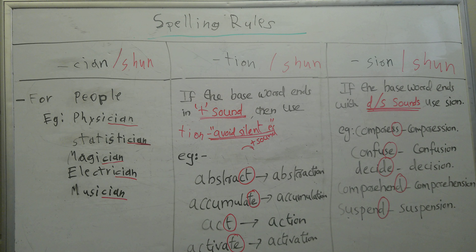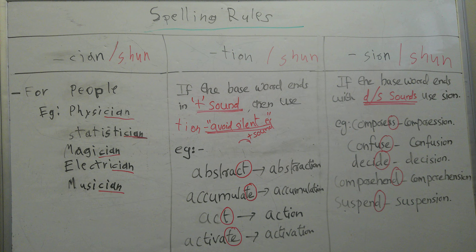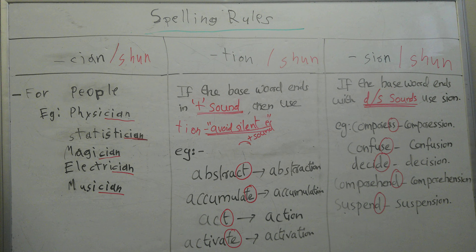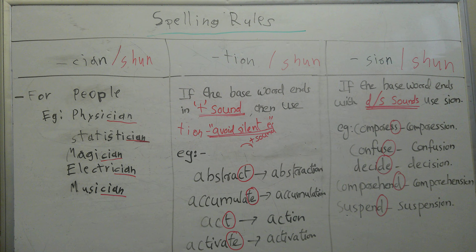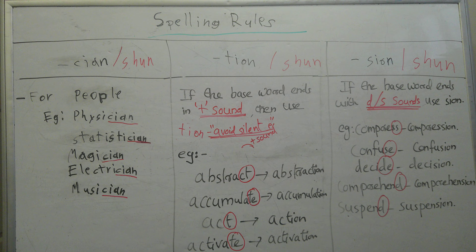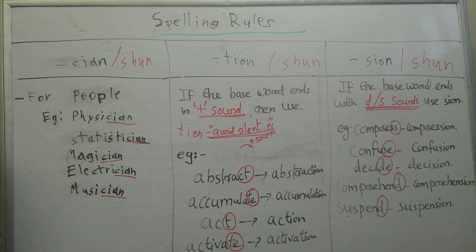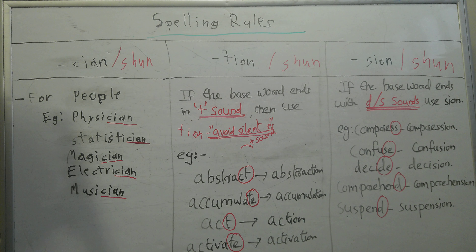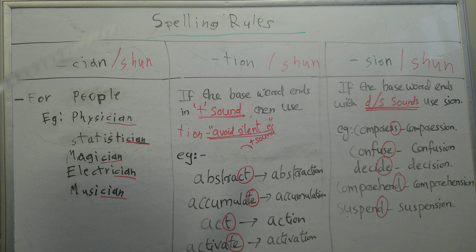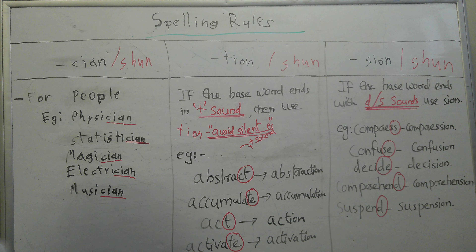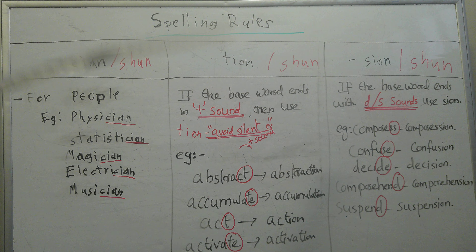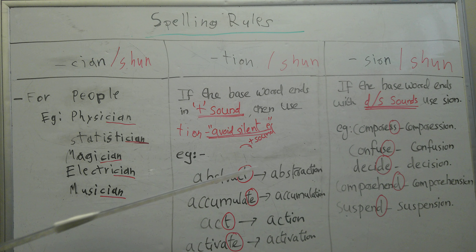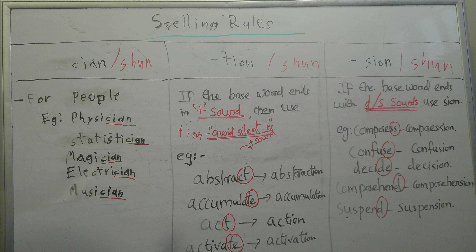Hi guys, welcome back to my channel. Today I'm going to show you a spelling rule that will help you get much better at spelling. Here we have three simple suffixes: the first one is C-I-A-N, the second one is T-I-O-N, and the third one is S-I-O-N. They all make the 'shun' sound.